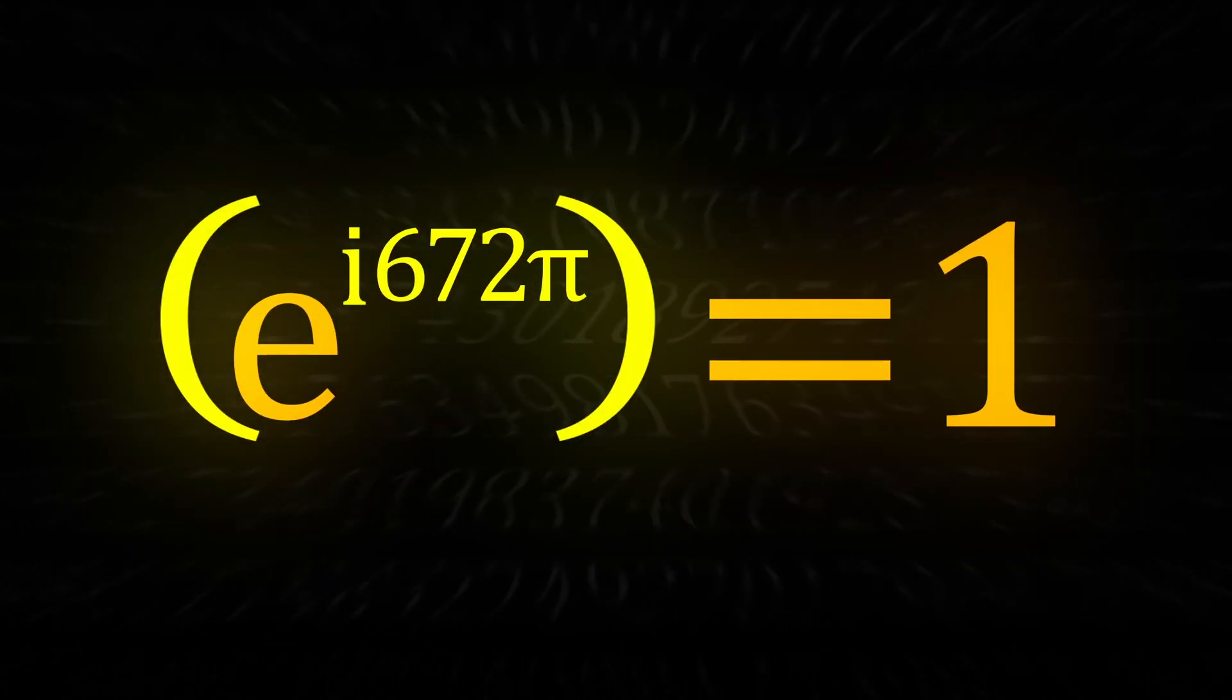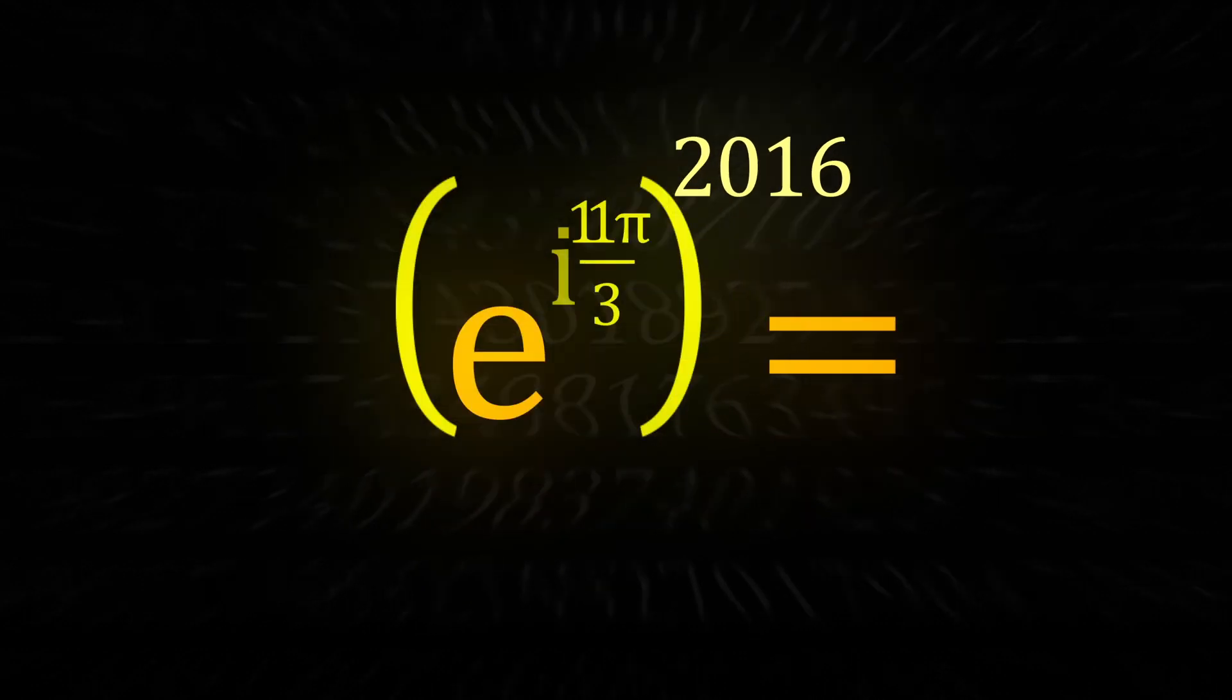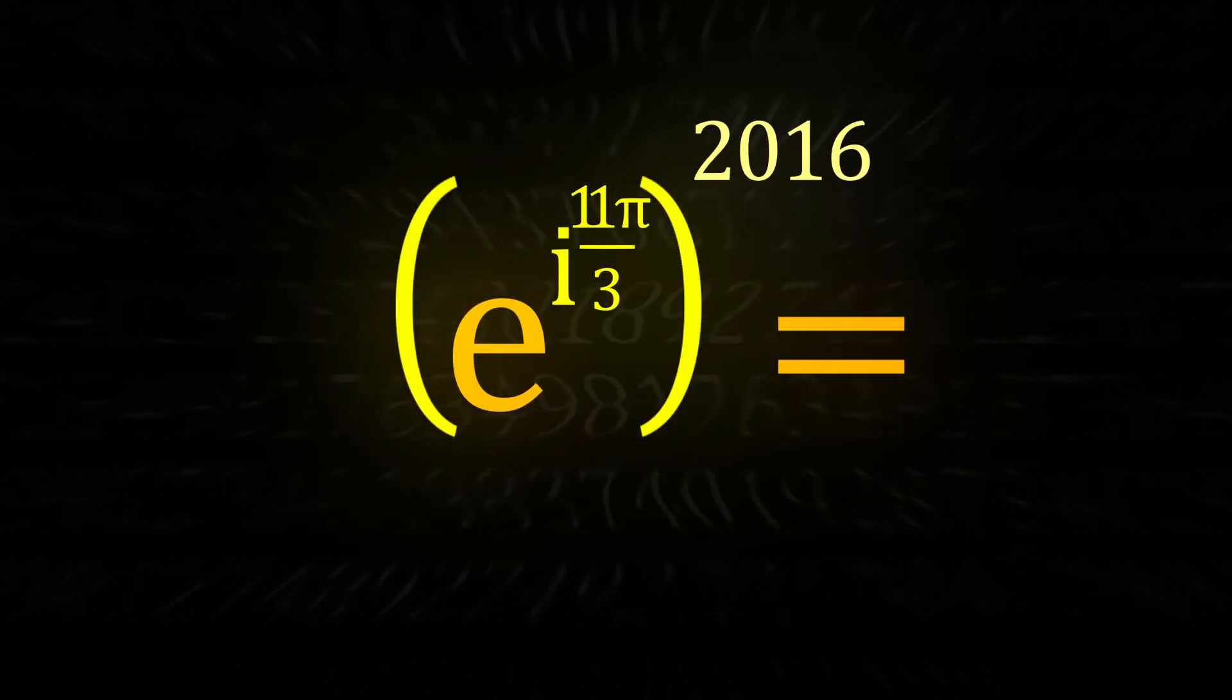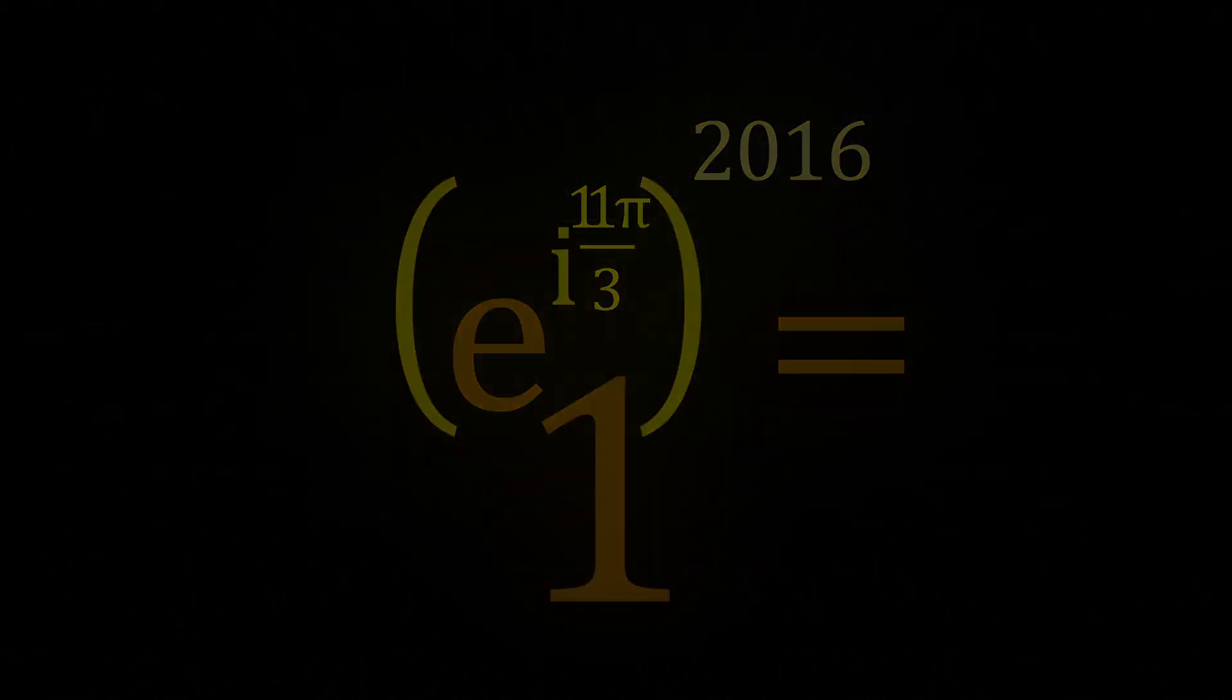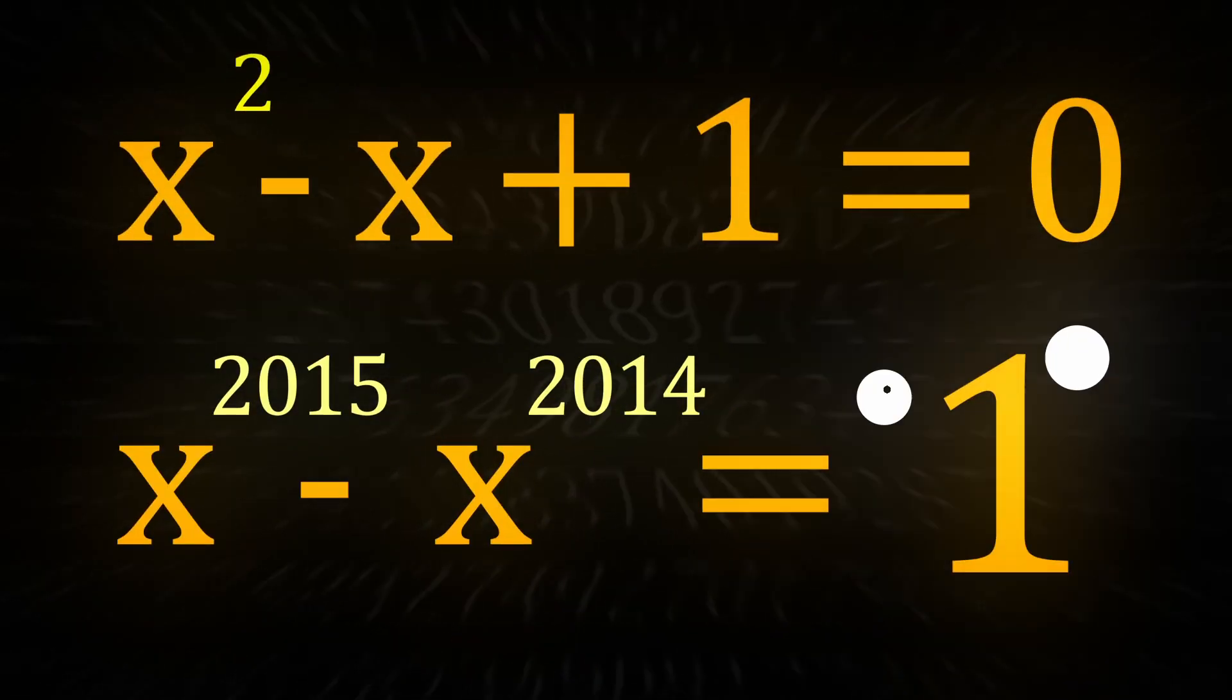If we insert the other possibility of e to the 11 pi divided by 3 multiplied by i, it still gives 1, just with more rotations to get there. So, to answer the question, it's 1.